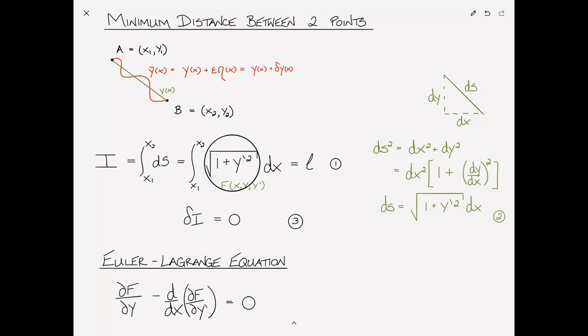Now since we know our functional over here is only a function of y prime, I mean y prime is a function of x, but it's not explicitly a function of x. It's explicitly only a function of y prime.